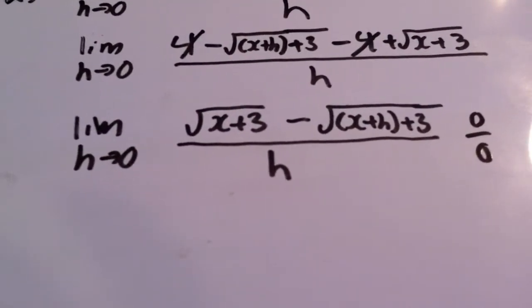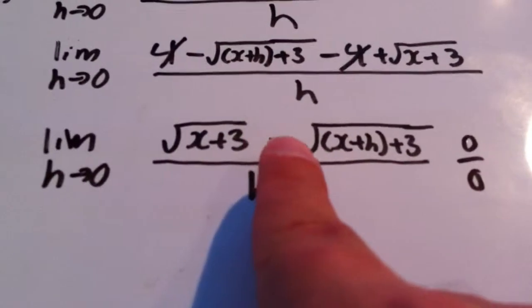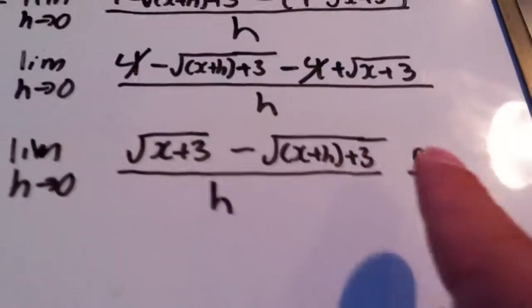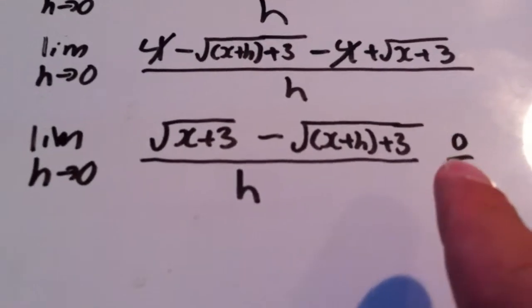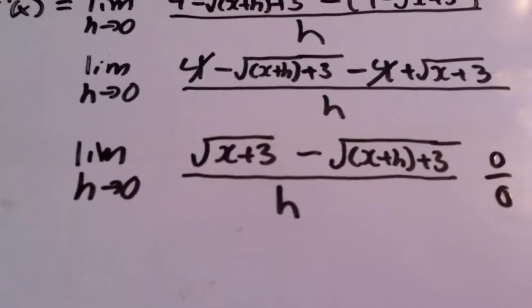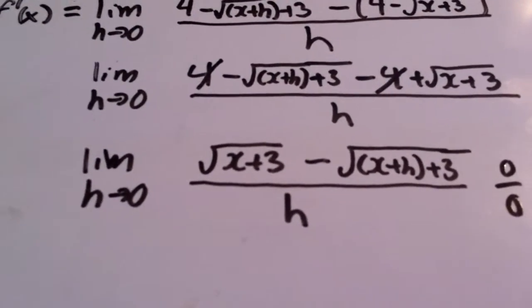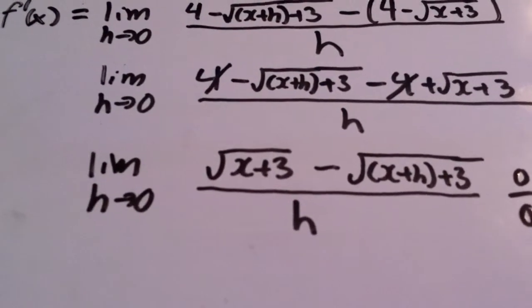Which would be √(x+3) plus (change that to a plus) √(x+h+3). But remember, you have to do both the top and the bottom. So you should probably try to do that, and I will continue solving this problem in a little bit.